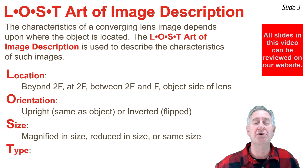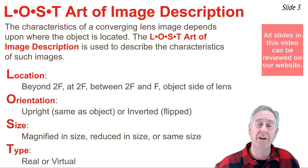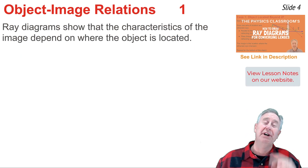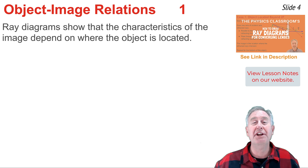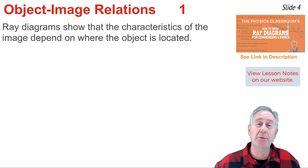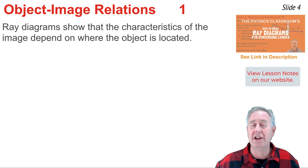The T in LOST refers to the type of image. An image can be real or virtual. In a previous video, I discussed how to construct ray diagrams for a converging lens. A ray diagram helps us to identify the location of the image produced, but it also helps us identify the orientation, size, and type of the image.